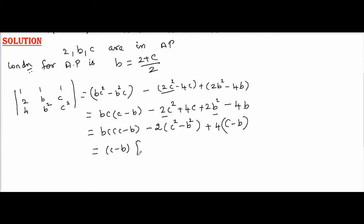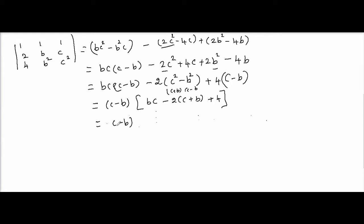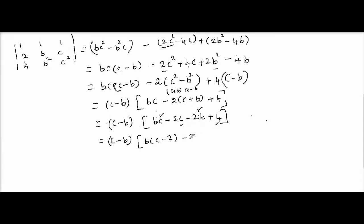Let me take (C minus B) outside. We get the first term (C minus B) with remaining BC. The second term C² minus B² can be written as (C + B)(C minus B). So it is (C minus B) times [BC minus 2(C + B) + 4], which expands to (C minus B) times [BC minus 2C minus 2B + 4]. Grouping the remaining terms, we get C minus 2 and B minus 2. This is the determinant value.